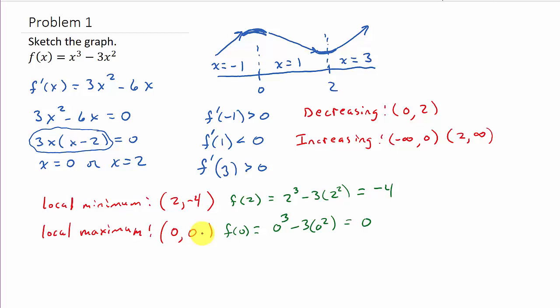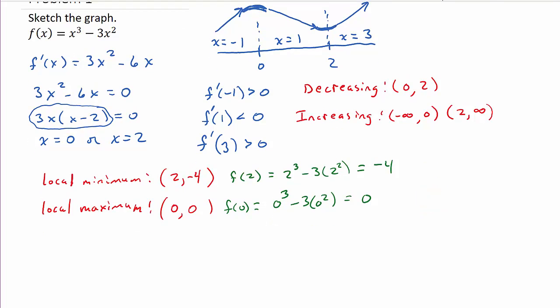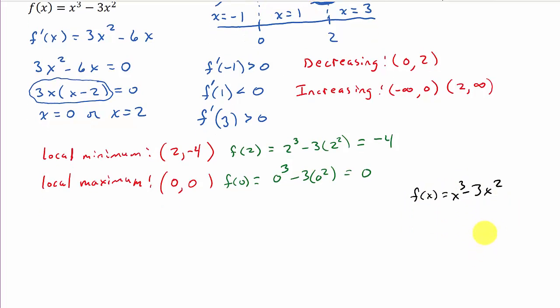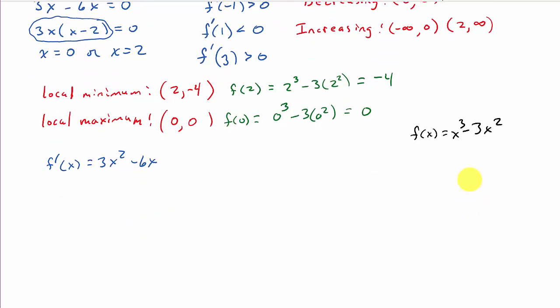Now we've got to find concavity — where the graph is concave up and where it's concave down. To do that, we take the second derivative. The first derivative is 3x squared minus 6x, so the second derivative f double prime is 6x minus 6. We set that equal to zero: 6x equals 6, so x equals 1.